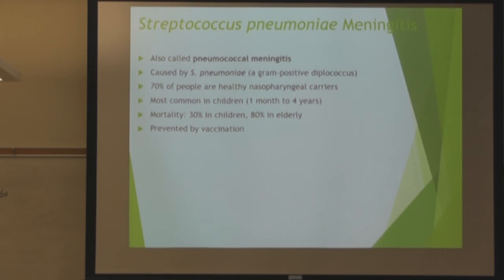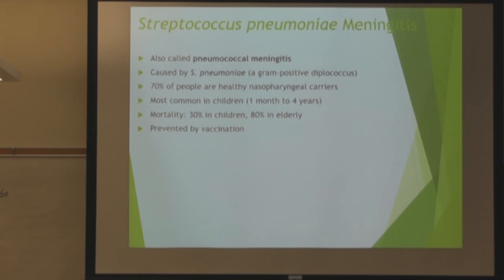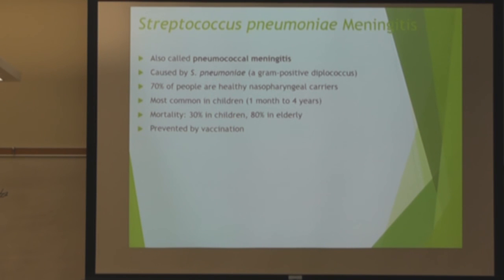Streptococcus pneumoniae is differentiated because it's a gram-positive diplococcus. The numbers are huge — 70% of people are healthy carriers. It's most common in young children and the elderly, and it's also prevented by vaccination.